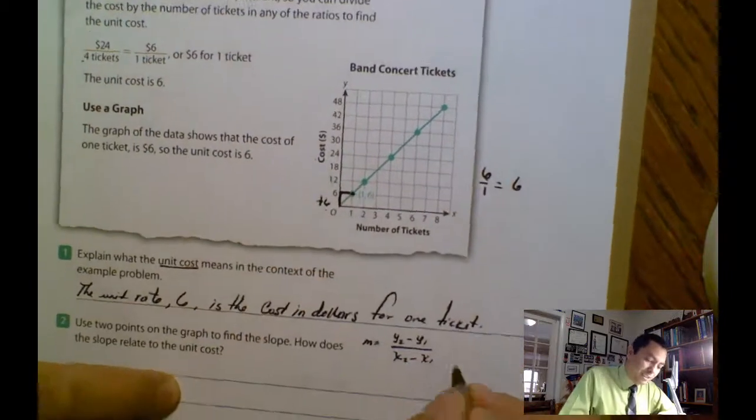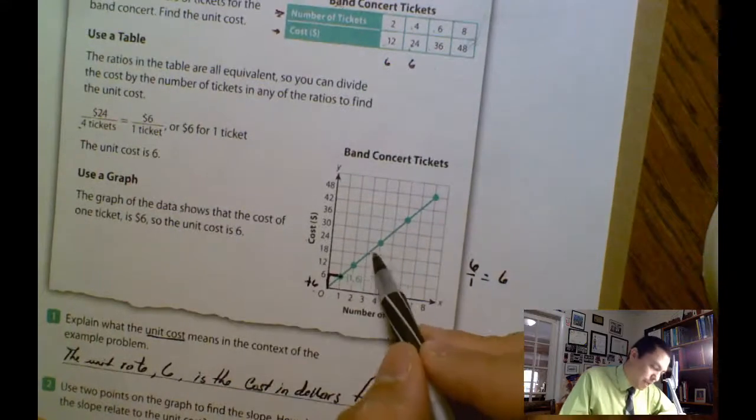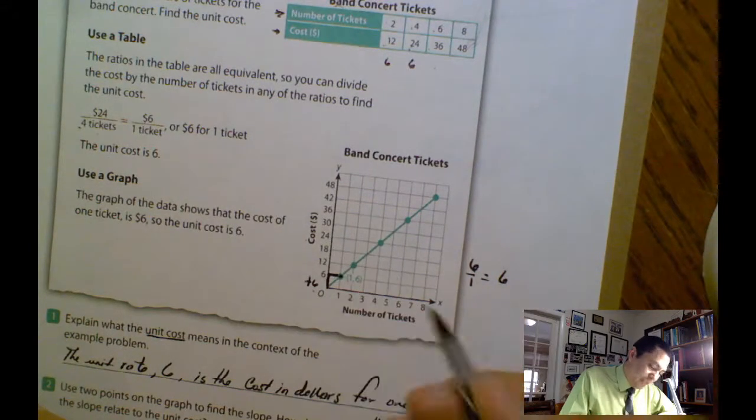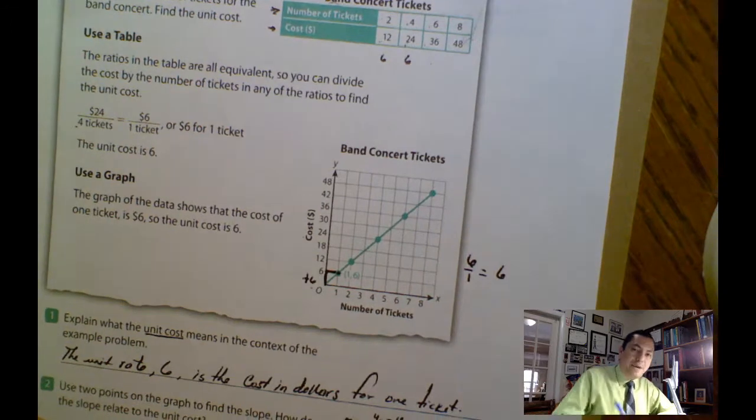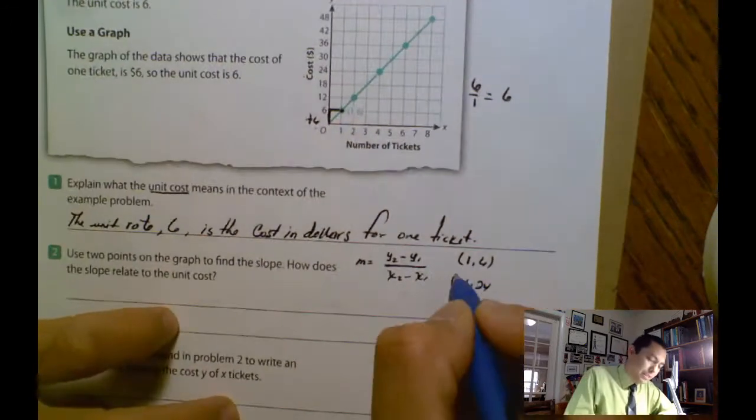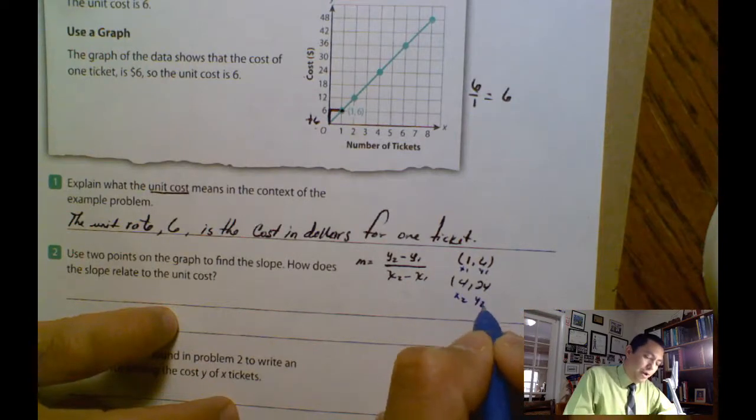I can choose two points. I'm going to choose the first one. This one is 1, 6. And the second one I'm going to choose, this point is 4 and 24. 4 and 24. And then you name it. This is x1, y1. And this one is x2, y2.